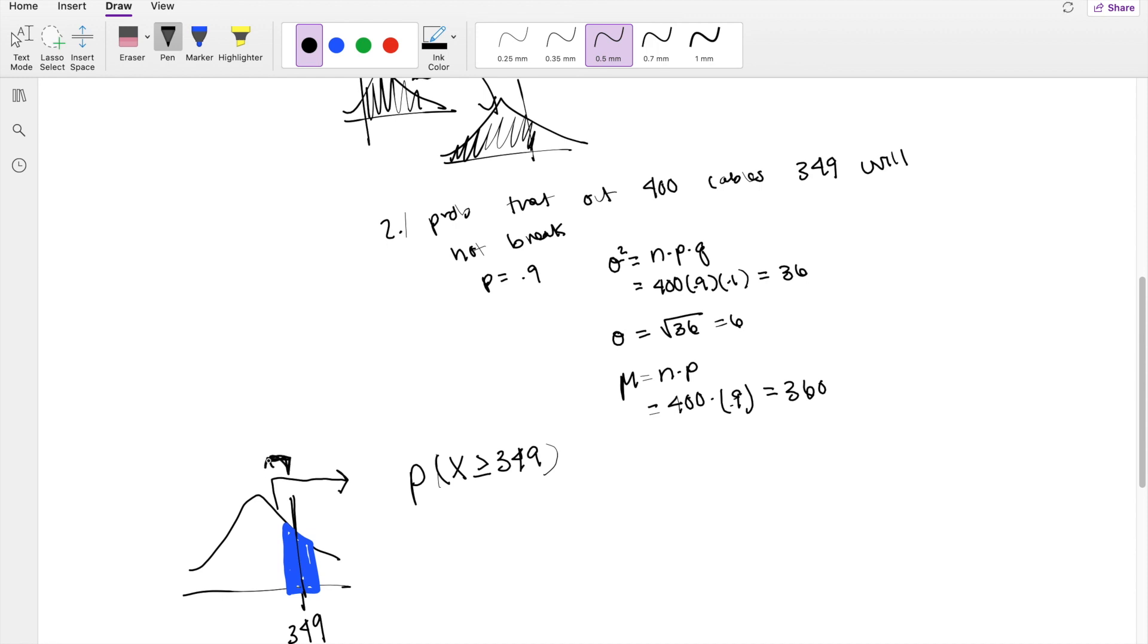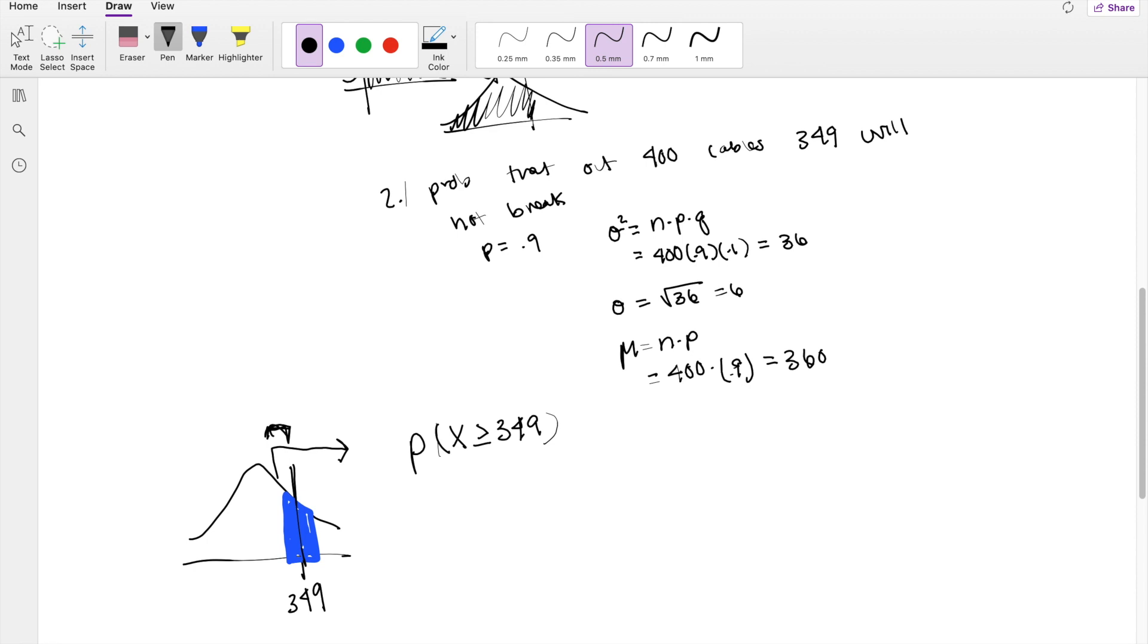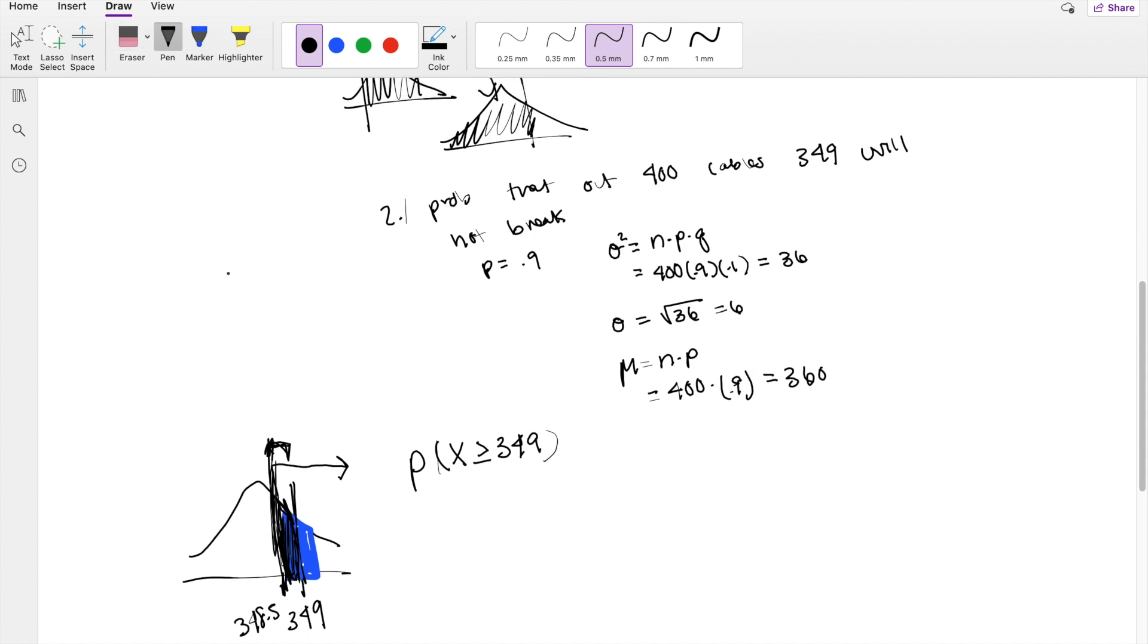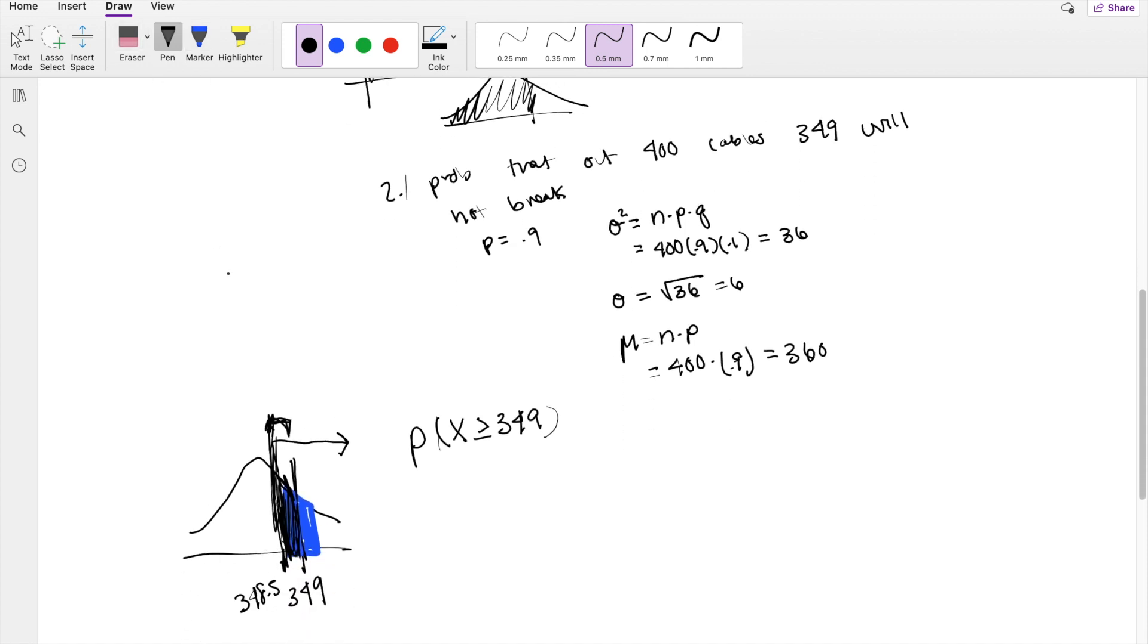So it's better for us to start a little bit smaller, so we can subtract 0.5 and start at 348.5. If we start at 348.5, we can ensure that we include this part that's not counted because it's a discrete variable. I hope that makes sense. But again, check out my other video about continuity correction.